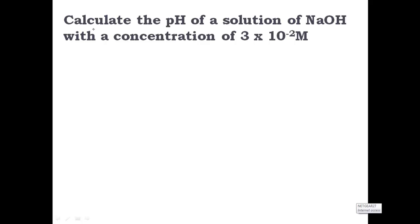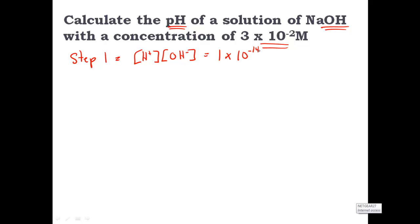In our first example, we're asked to calculate the pH of a solution — the solution is a base with a hydroxide ending, and the hydroxide has a concentration of 3×10⁻² molar. Step 1: we use the formula [H⁺] × [OH⁻] = 1×10⁻¹⁴, and rearrange it so that the H⁺ concentration equals 1×10⁻¹⁴ divided by the hydroxide ion concentration, which the problem tells us is 3×10⁻².